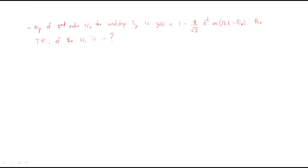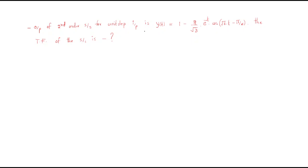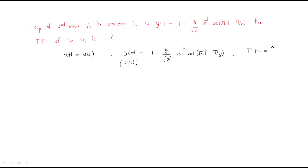Hello everyone. In this session we will discuss some problems. The given problem is: the open loop transfer function of a unit feedback system — actually, the problem is: the output of a second-order system for unit step input equals y(t). The given input r(t) is the unit step, and we have the given output. The question is asking to find out the transfer function.